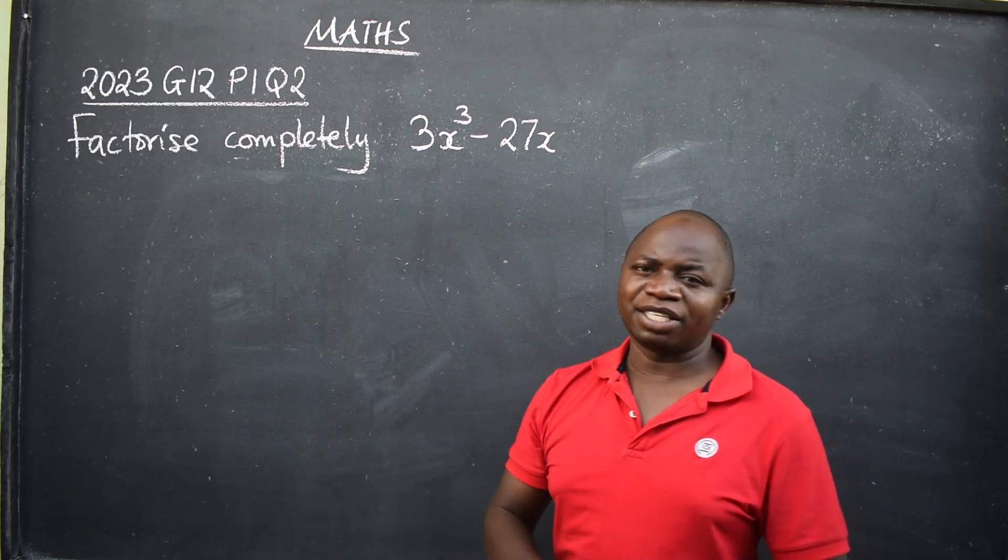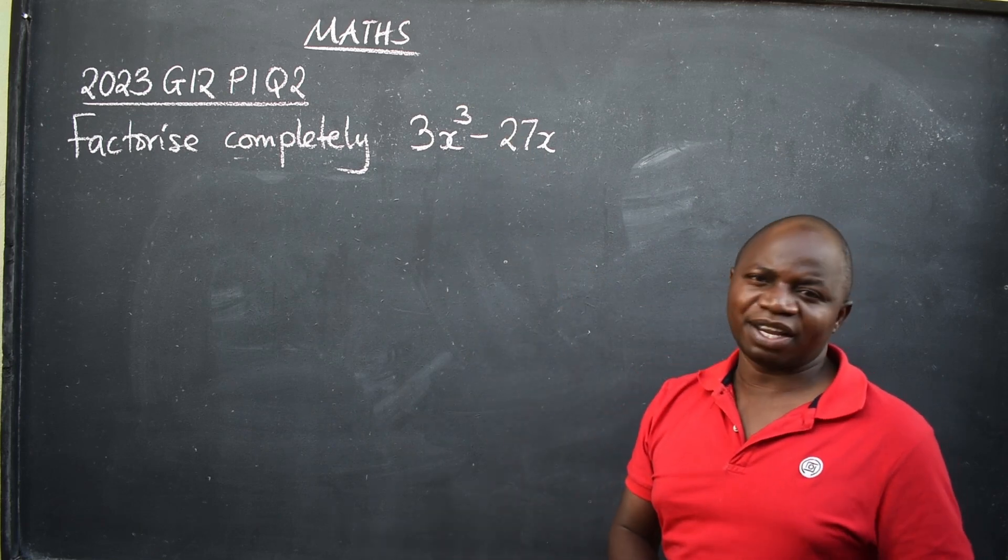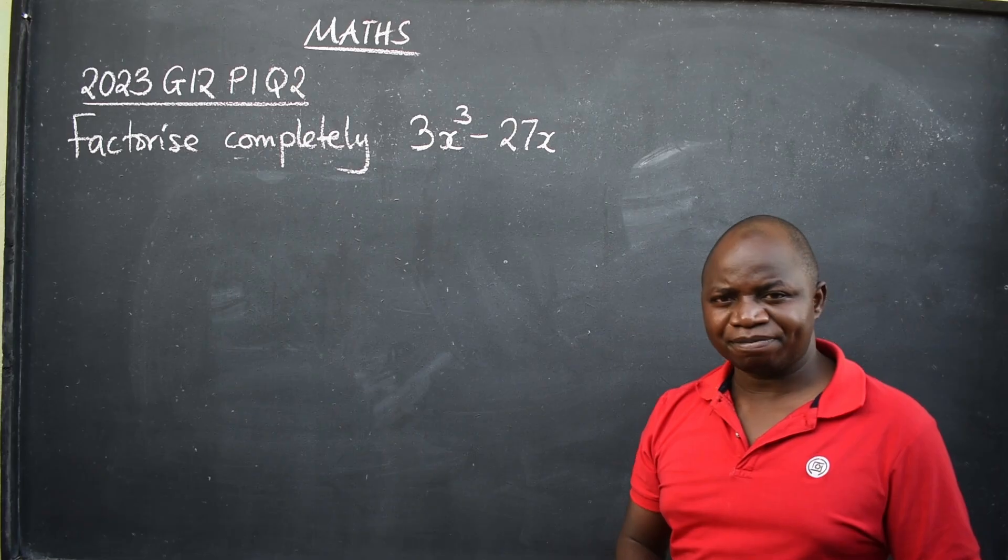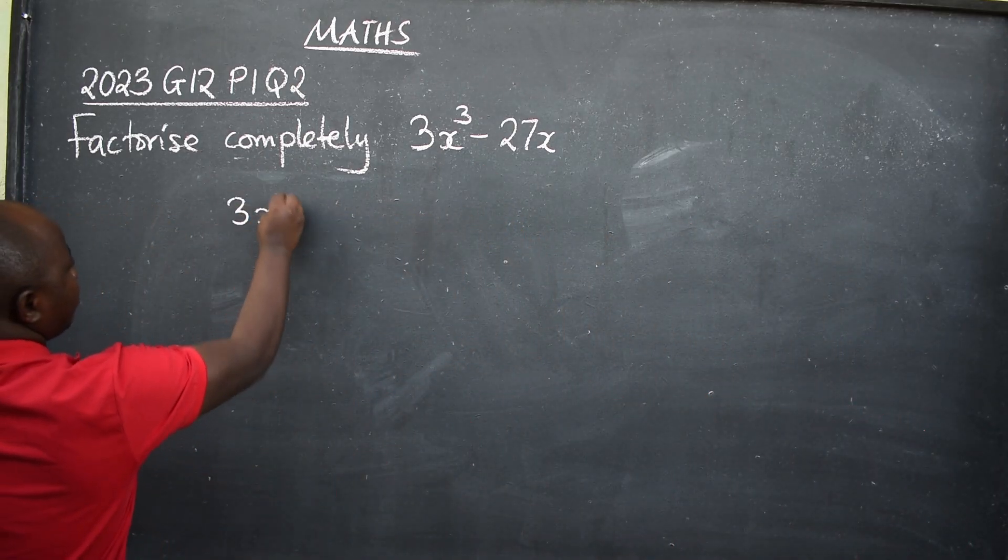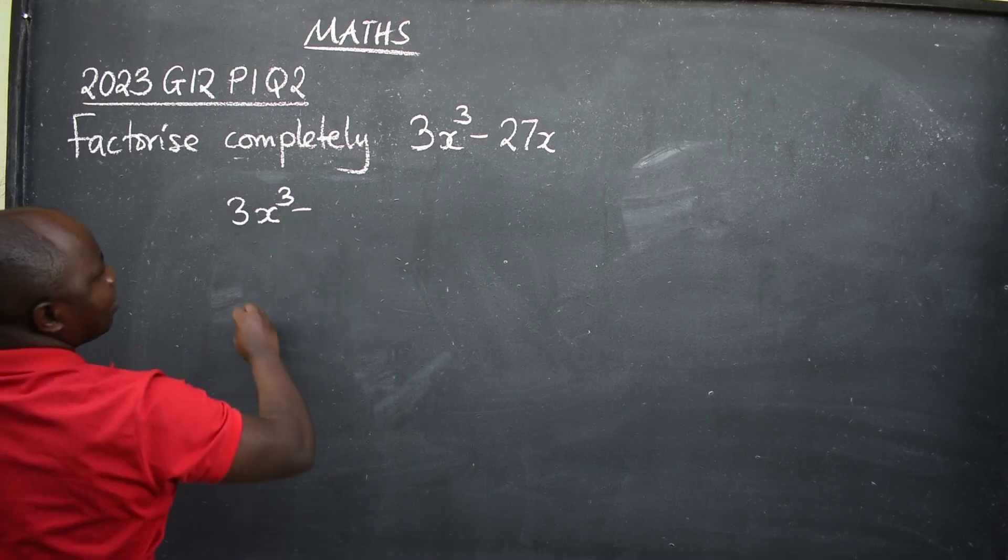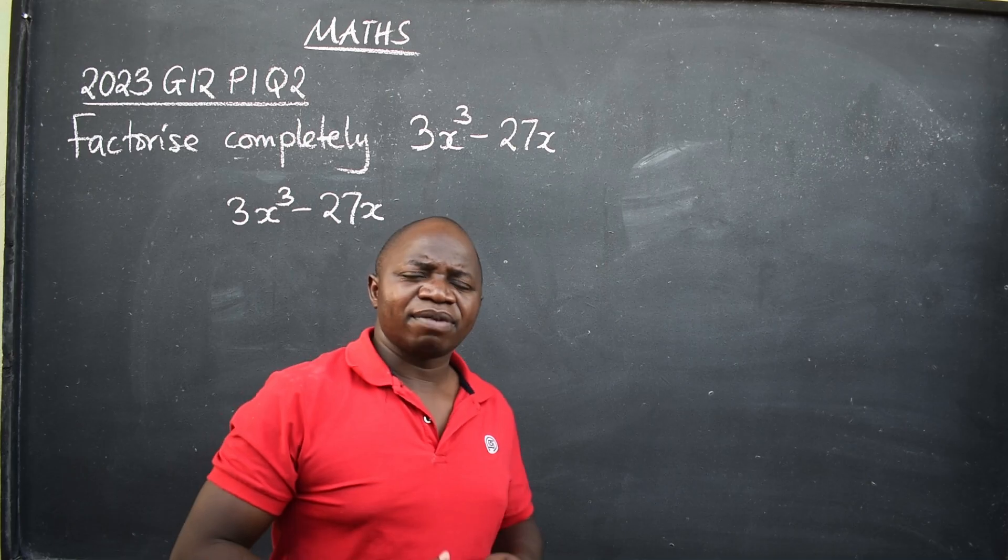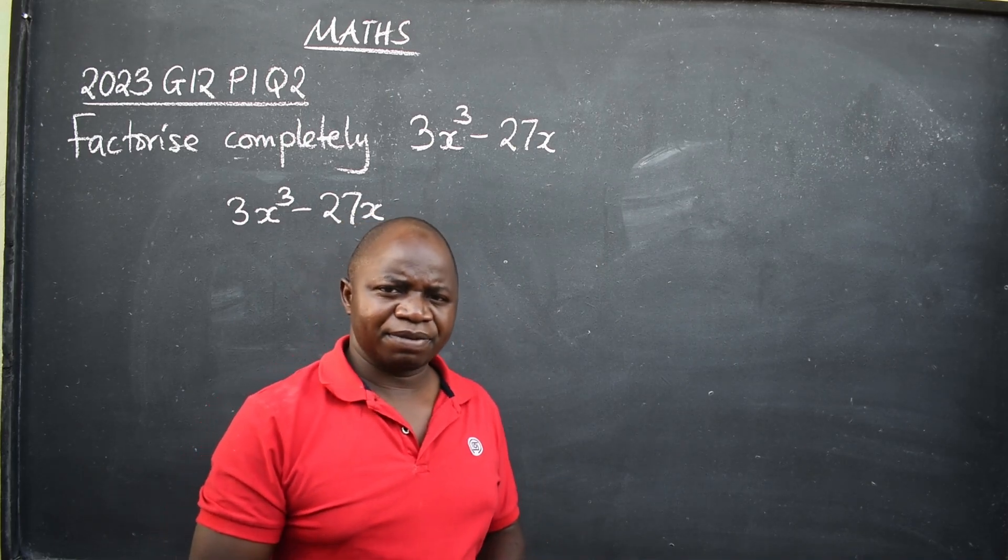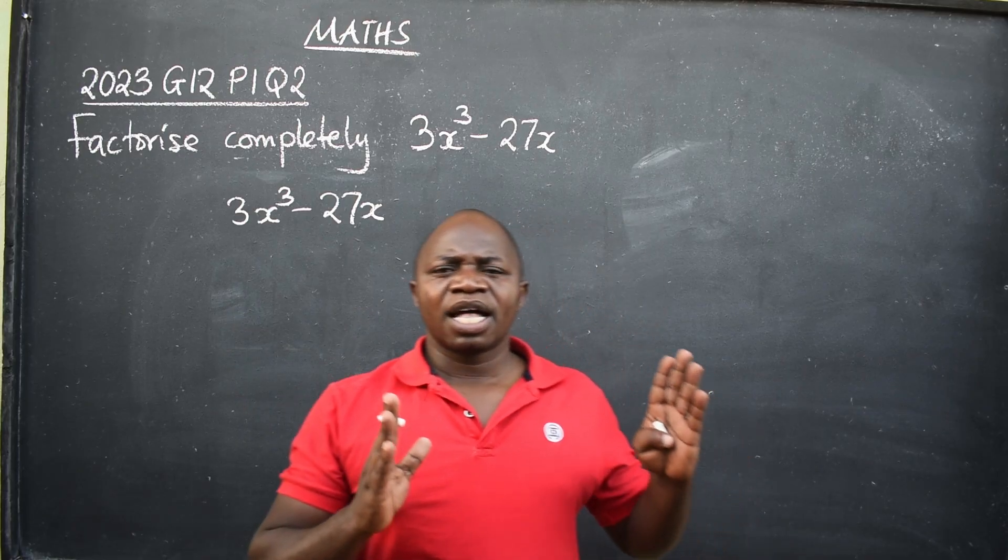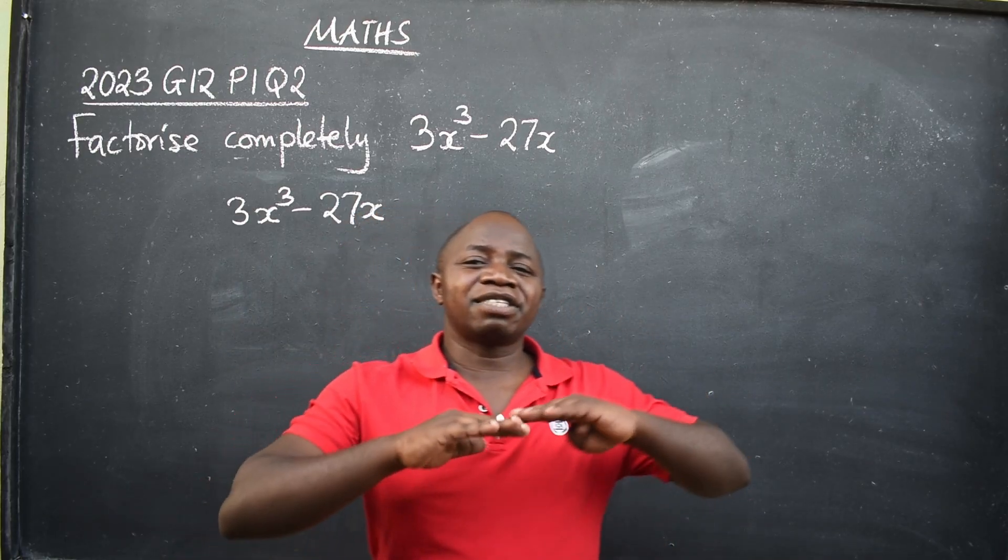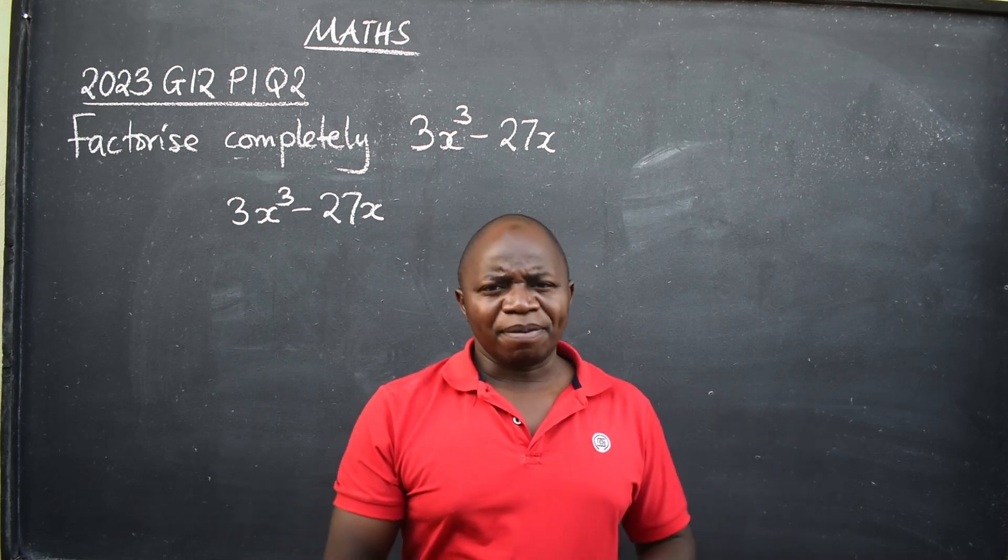With that knowledge in mind, this becomes very simple to factorize because you know what you are doing. You copy the equation, which is 3x³ - 27x. Now, we know we are dealing with difference of two squares. The principle there is that the terms must be in square forms. All the terms must be in square forms.